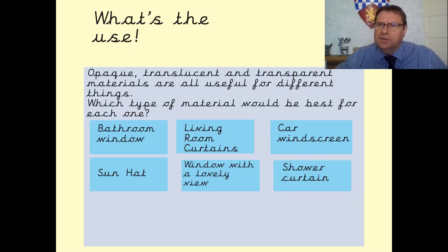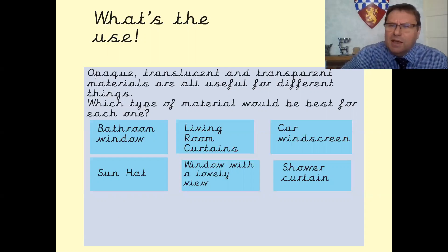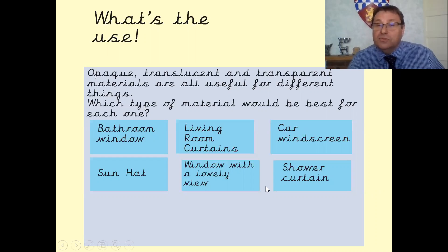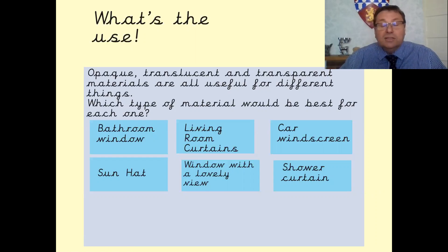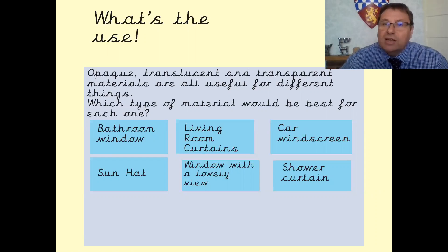So, a bathroom window. Now windows need to let some light in — that's the whole idea of them, to let light from outside into buildings. But a bathroom window? Most people in their bathrooms tend to be on the toilet or having a shower or a bath. You don't want to be seen, you don't want to let all of the light through. So the chances are you're going to want a bathroom window which lets some light through but disperses it a bit. So I think they're going to be translucent.